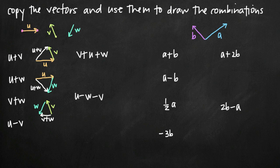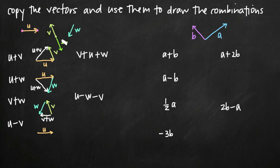For u minus v, we start with u. Up until this point we've done addition, but now we're dealing with subtraction. Negative v is the vector that goes in exactly the opposite direction with the same length as the original v — same magnitude, just opposite direction. So we attach negative v to the terminal point of u. That gives us u minus v, from our starting point to our ending point.